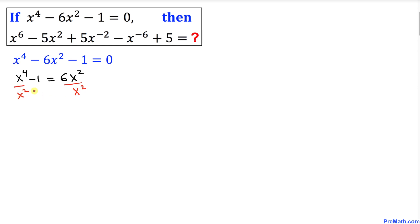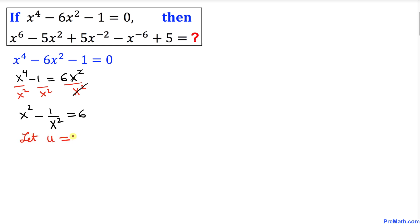Dividing each term by x²: x⁴ divided by x² gives us x², and -1 over x² on the left, equal to 6 on the right. Now I want to do a substitution method — let u = x². So this equation simply becomes u - 1/u = 6.